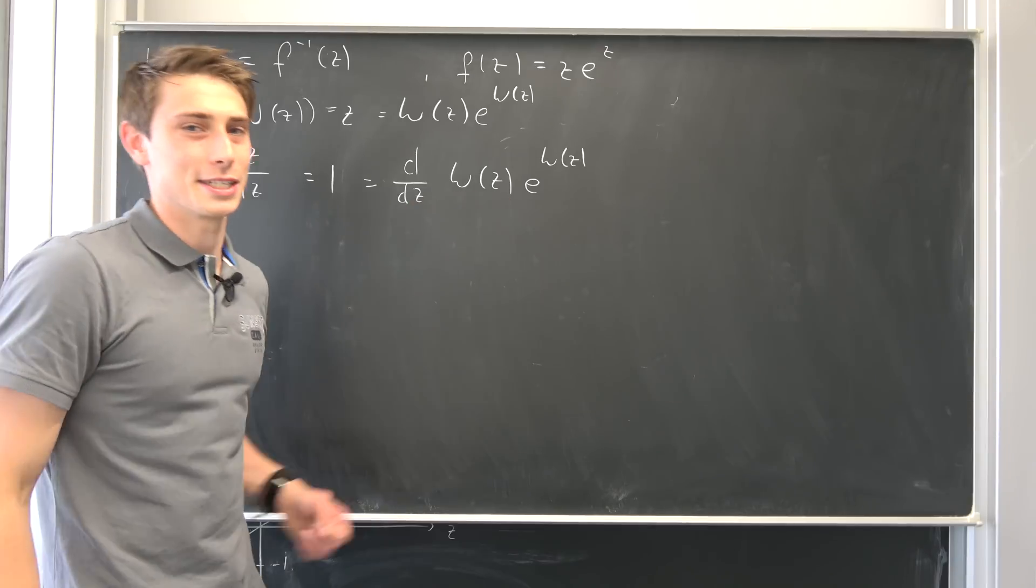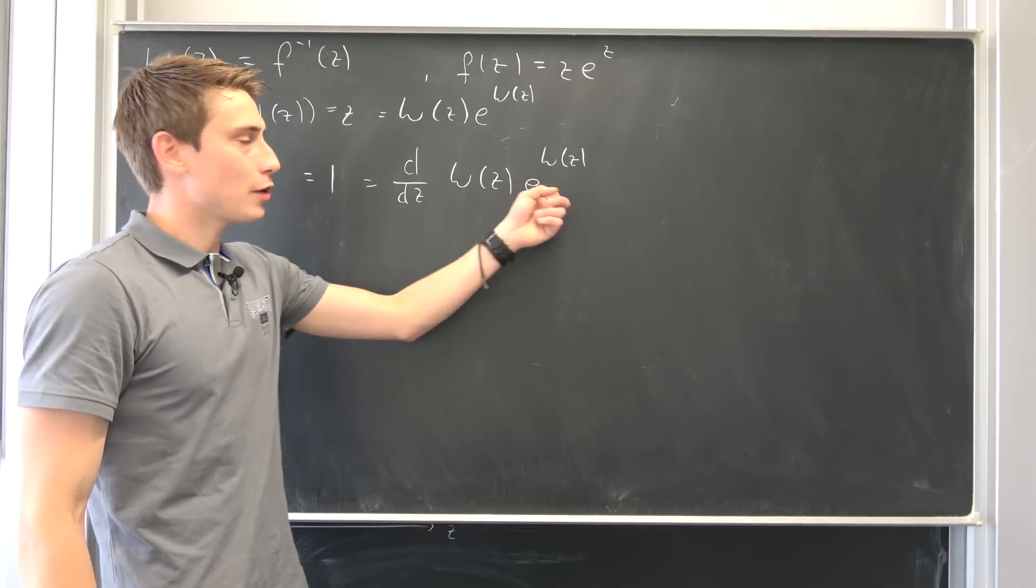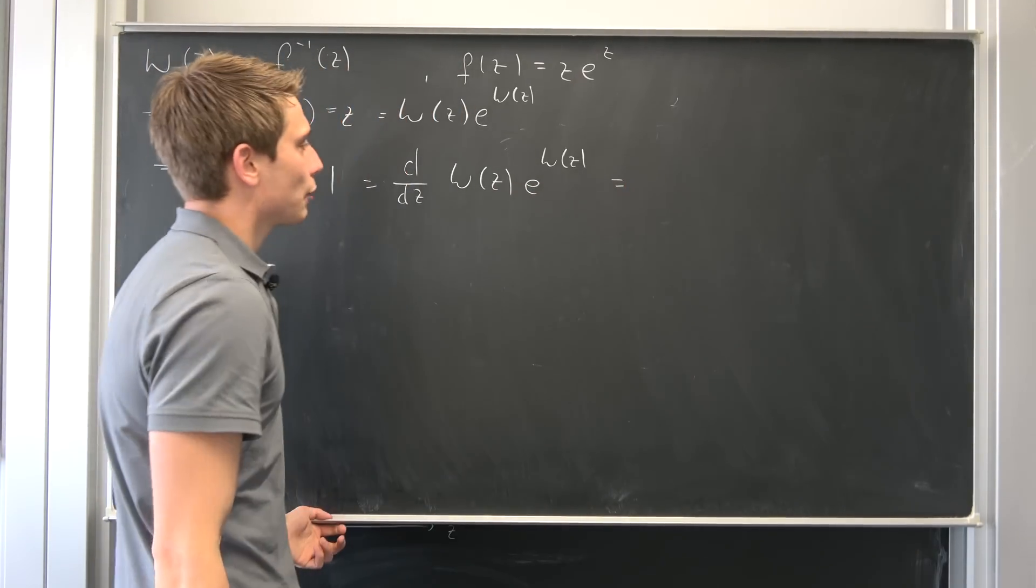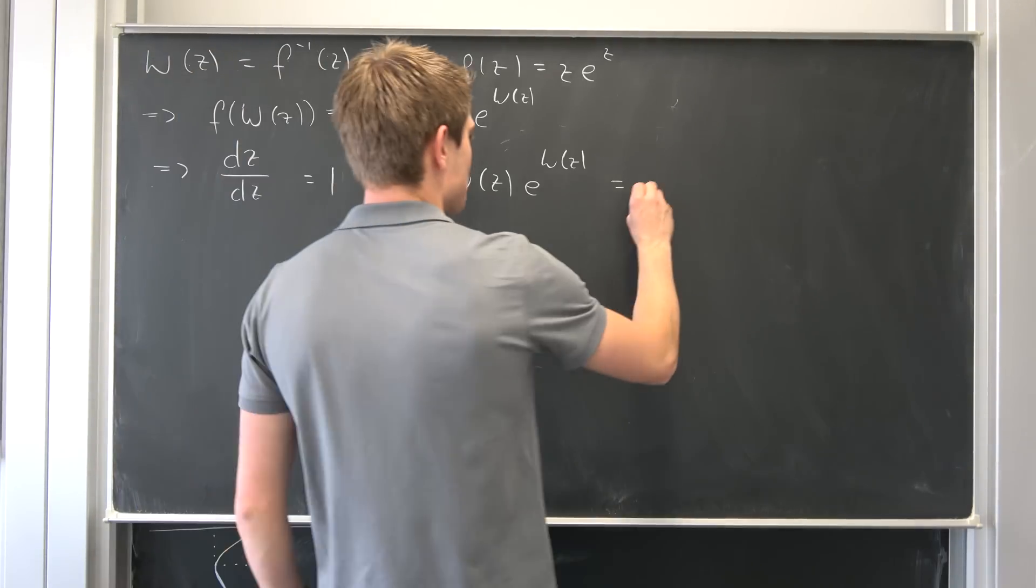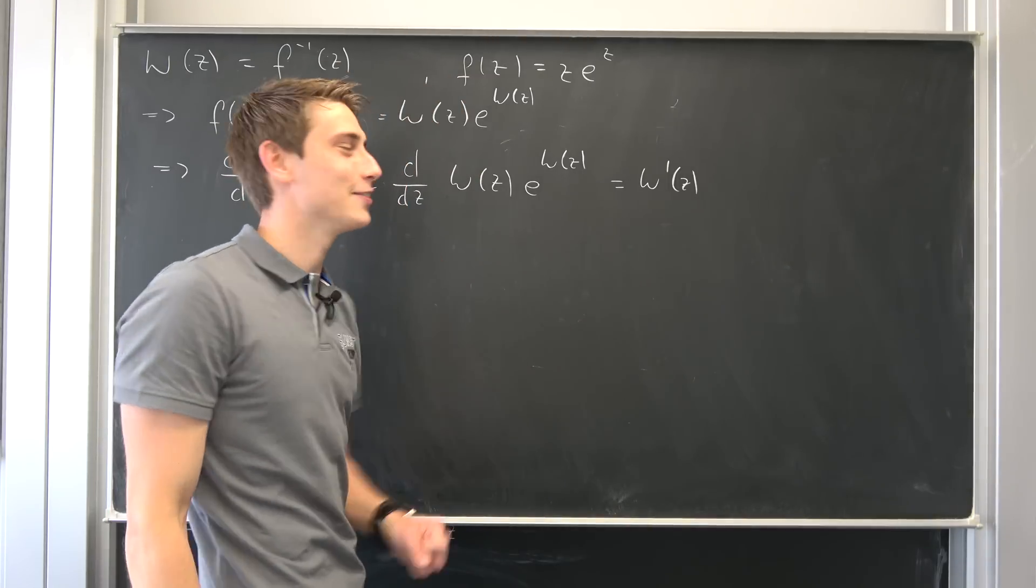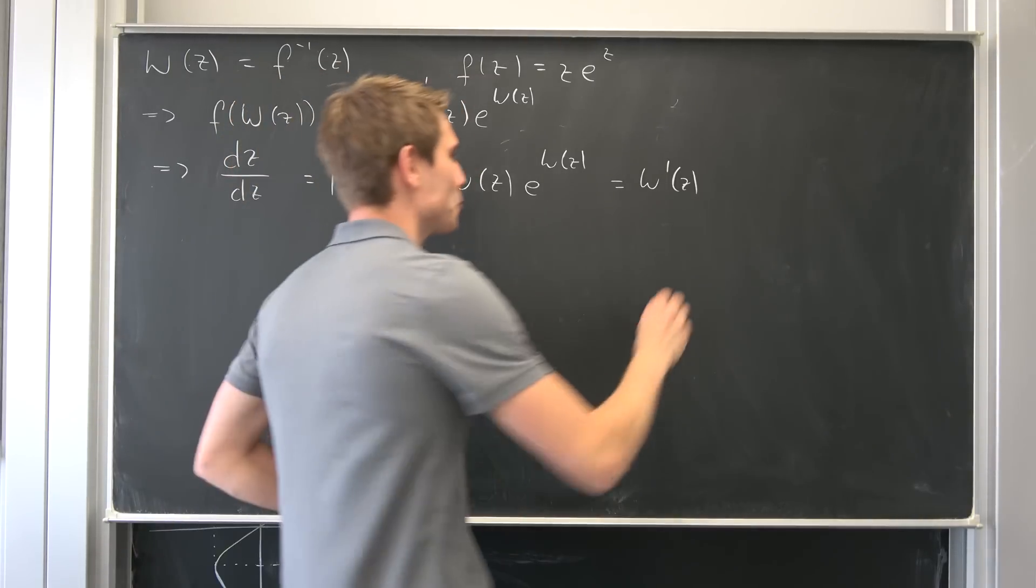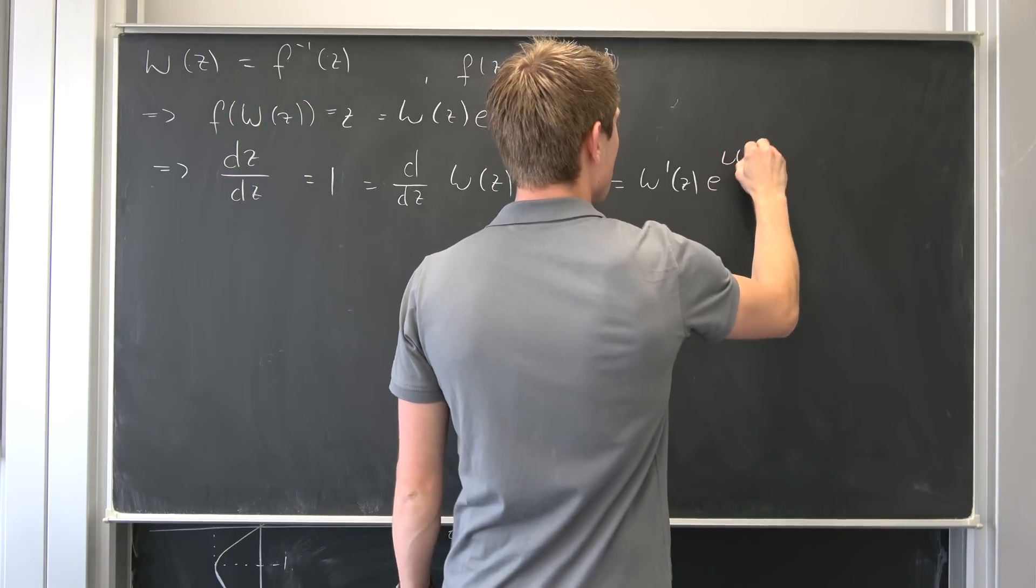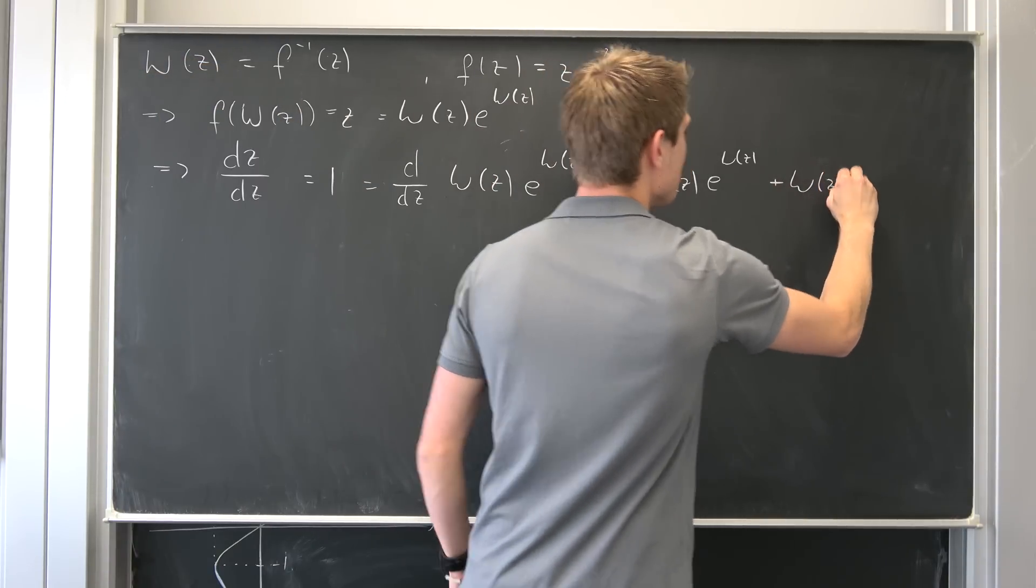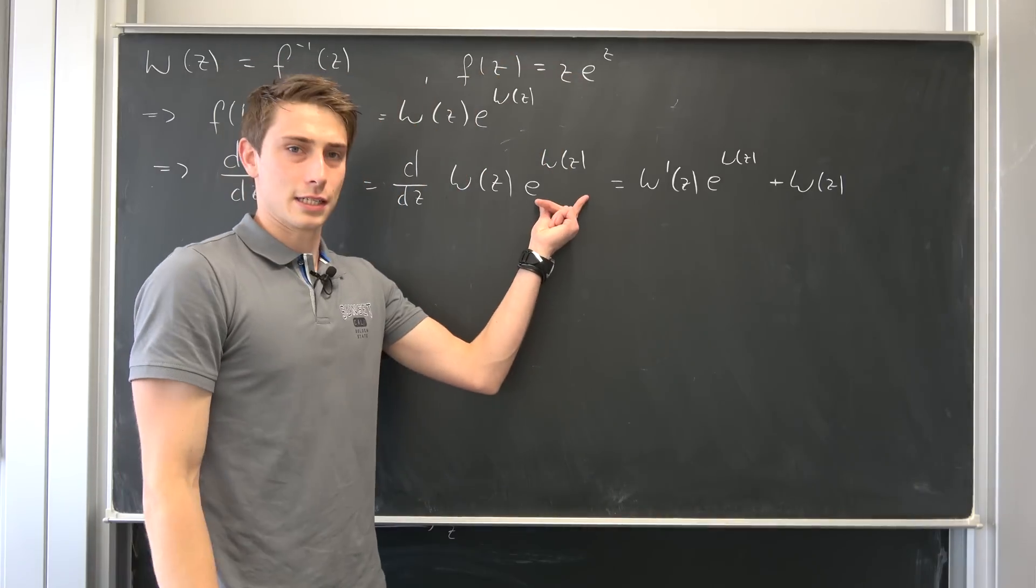So we've got this right here. And you see, both are functions of z, so we need to use the product rule in the first case. First I would like to differentiate this left hand side, so we end up with Lambert prime of z. This is indeed just the derivative of Lambert of z. e to the Lambert of z, and now we're going to leave this as it is, plus Lambert of z. And now we need to differentiate this thing.